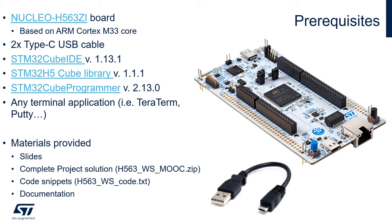Regarding the software and firmware needed: first, you need STM32CubeIDE — our IDE for STM32 — which you'll need to install on your machine. We recommend at least version 1.13.1. You will also need to install the Cube library package for the STM32 H5; we recommend at least version 1.1.1. Finally, you will need STM32CubeProgrammer, our standalone programmer for STM32, with at least version 2.14.0.